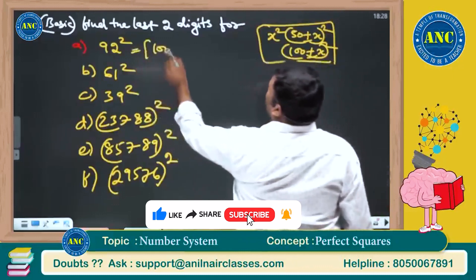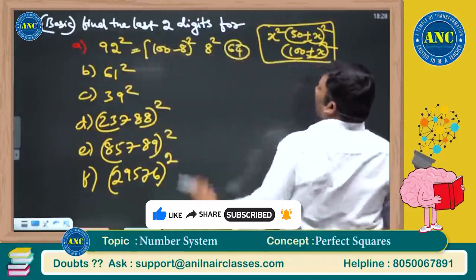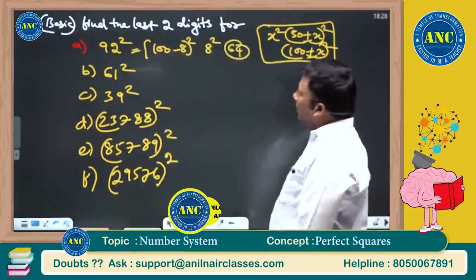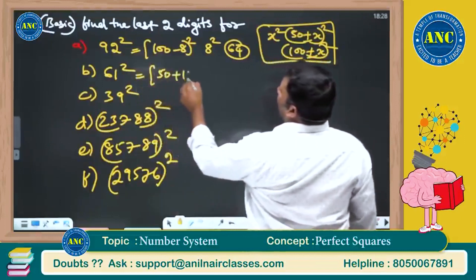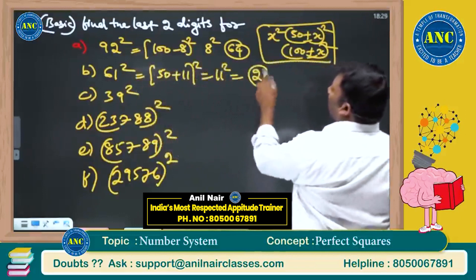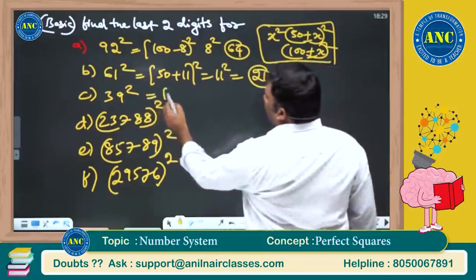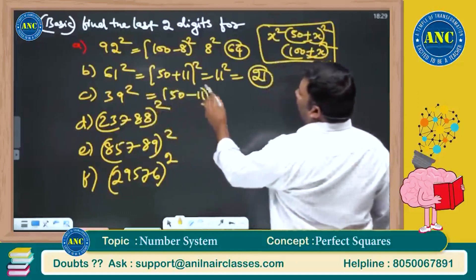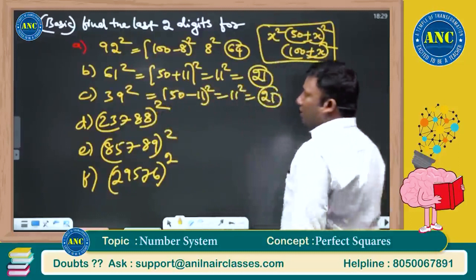These are nothing but 100 minus 8 square. 100 minus x square. 8 square is 64. First one answer is 64. 61 square, it is 11 greater than 50. 11 square is 121, last two digits is 21. 39 square, how much less than 50? 50 minus 11 square. 11 square is 121, answer is 21.